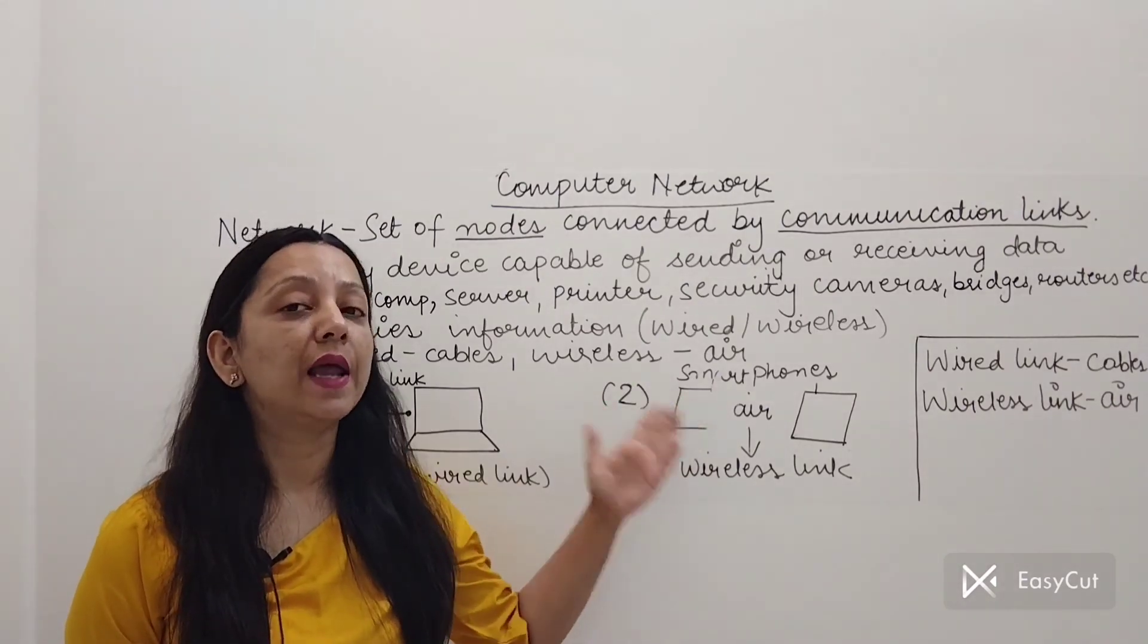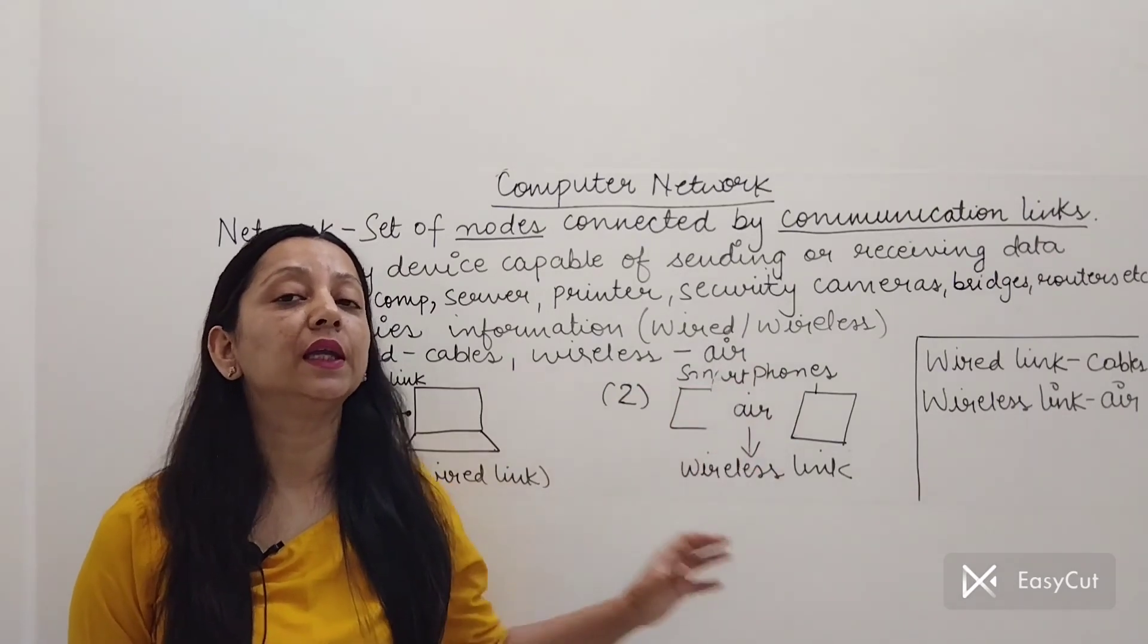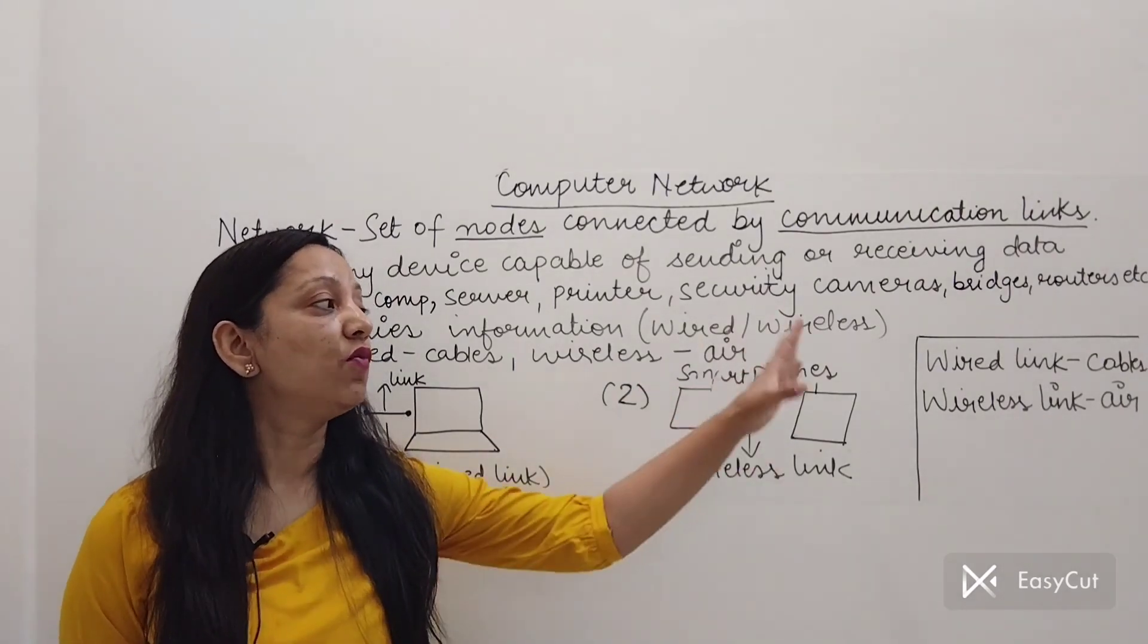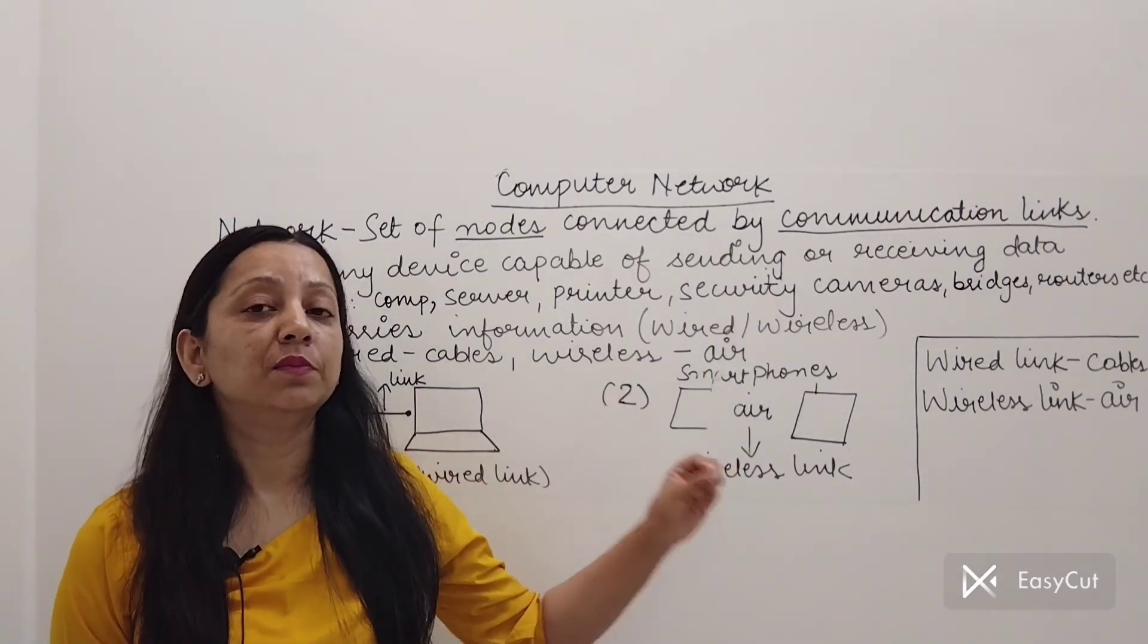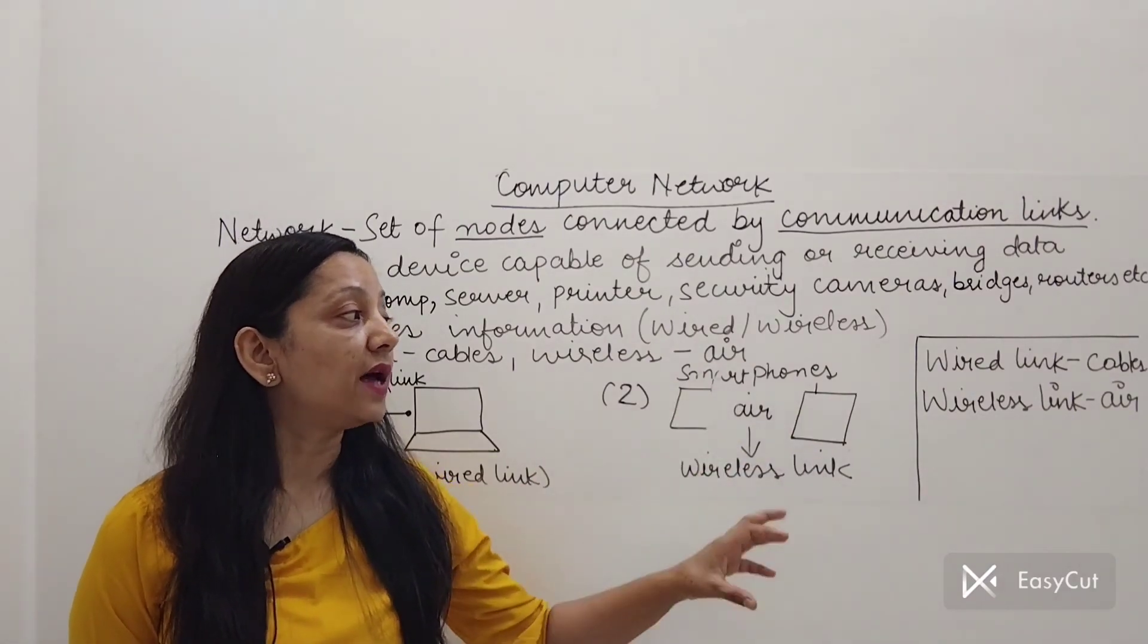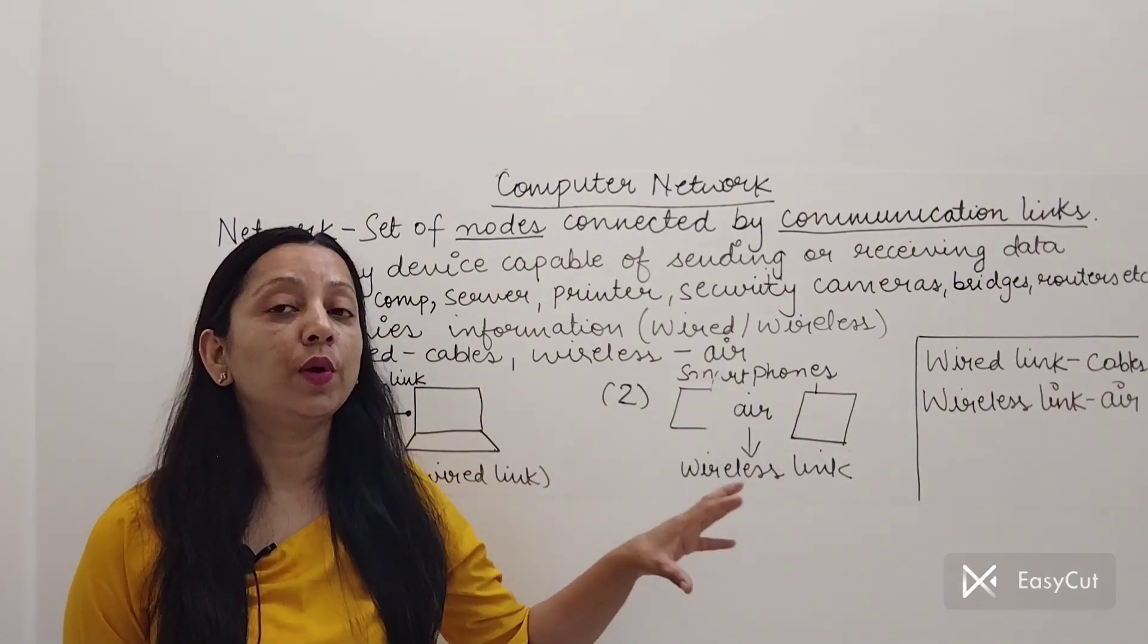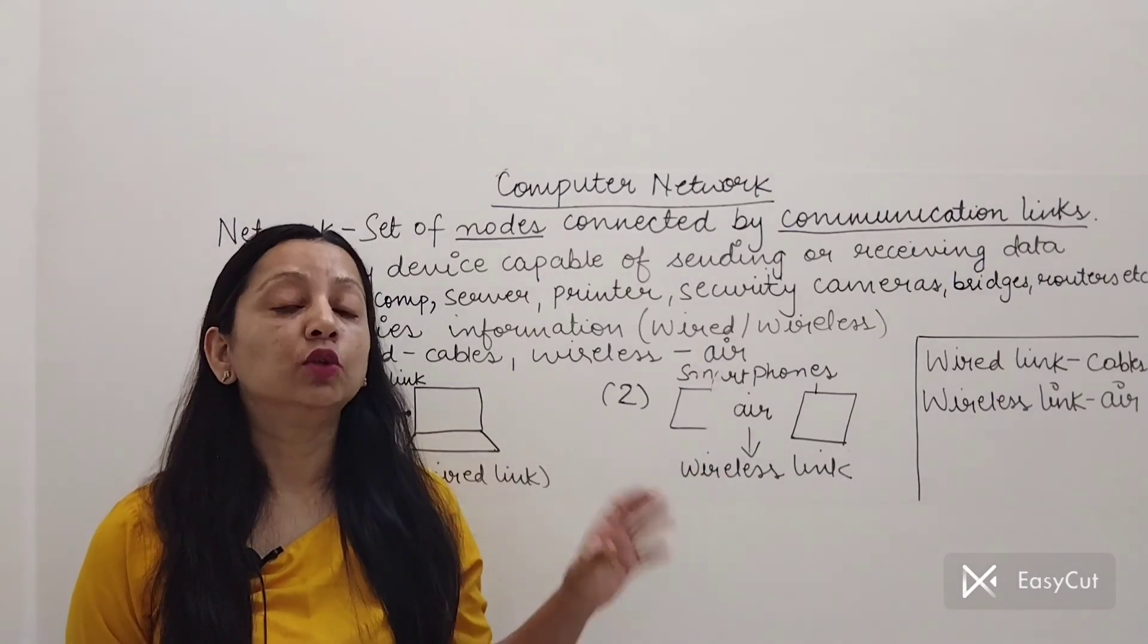Hence a wireless link. So basically if I talk of links, broadly I can classify them into two categories. The wired link which consists of cables. There are various types of cables which we will discuss in the further chapters. And the wireless link consists of air. Through air also there are various ways of communicating in a wireless manner. Those links also we will discuss in the future chapters.